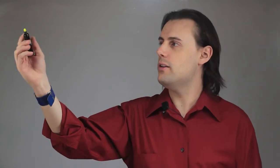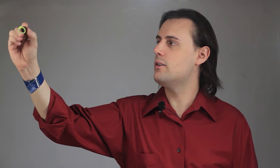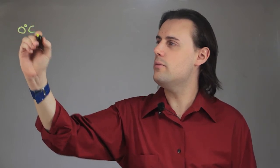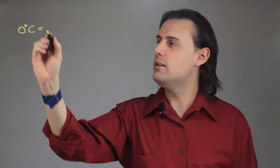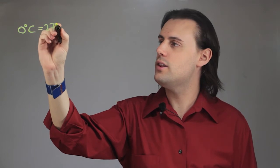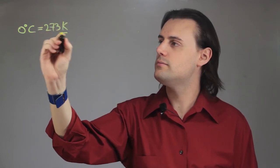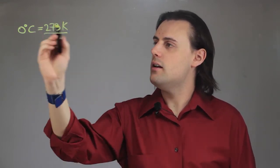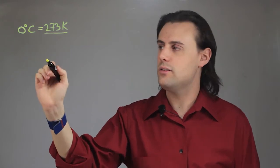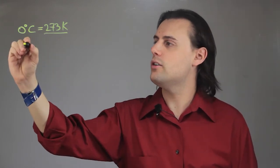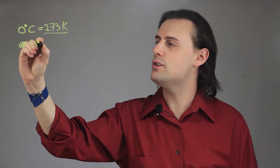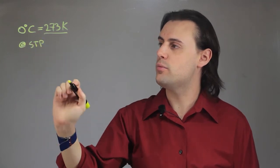So, the temperature to melt ice is, in degrees centigrade, zero, and this is equivalent to 273 Kelvin. And this temperature to melt ice, it's the melting point temperature, occurs at STP, which is standard temperature and pressure.